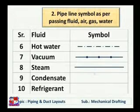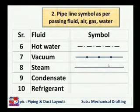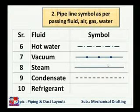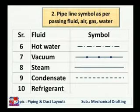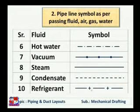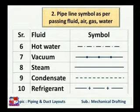Steam passing through the pipeline is shown by a thin line. In the previous case, cold water used a thick line; in steam, a thin line is used. Sometimes steam properties are mentioned, such as pressure, dryness fraction, or temperature. To show condensate passing inside the pipeline, a dotted or dashed line is drawn. To represent that some refrigerant is passing through the pipeline, a plus-plus symbol is drawn, which happens in refrigeration and air conditioning circuits such as VCR or VAR circuits.